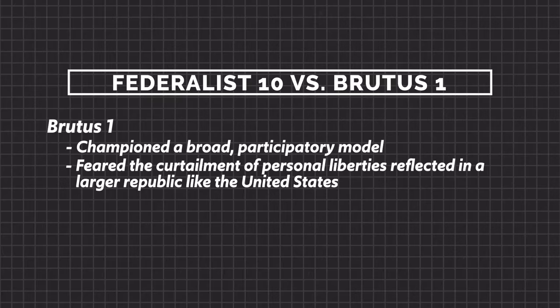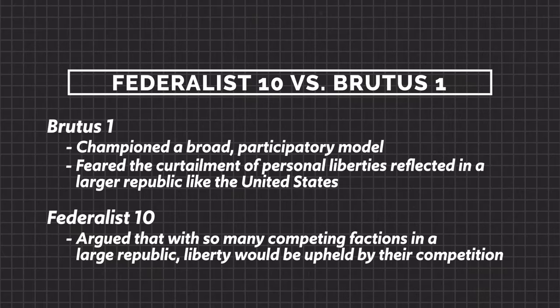The tension between the three forms of democracy is at the heart of the argument between Federalist Ten and Brutus One. Brutus championed a broad participatory model and feared the curtailment of personal liberties in a larger republic. Federalist Ten argued that with so many competing factions in a large republic, liberty would be upheld by their competition — an example of pluralist democracy. Since these are required documents, let's go deeper into both.